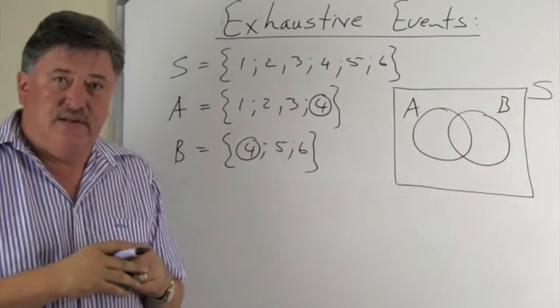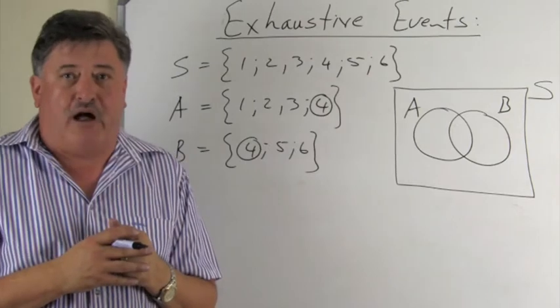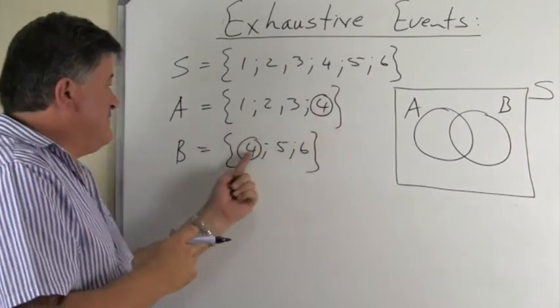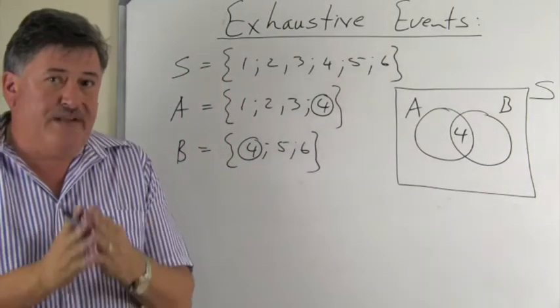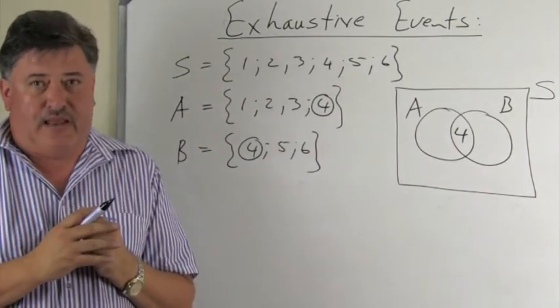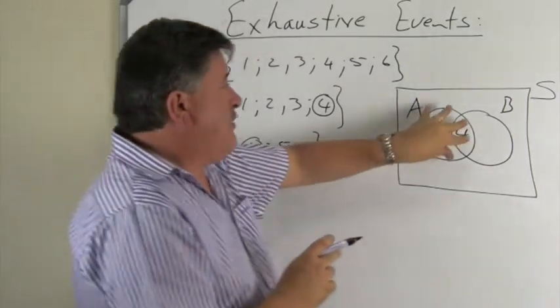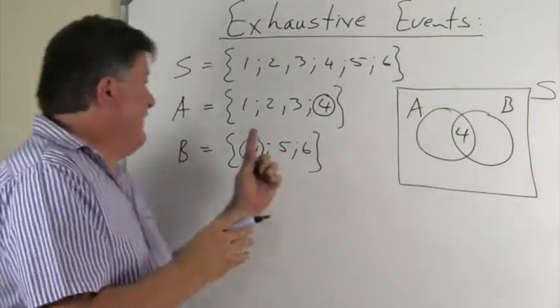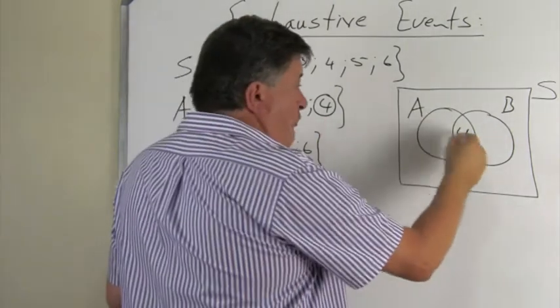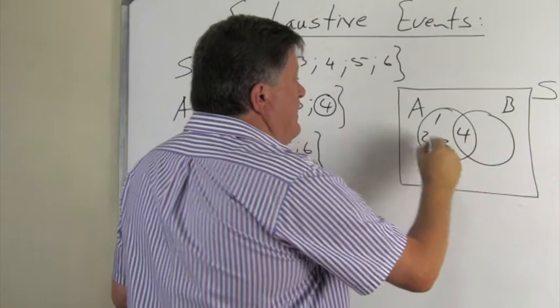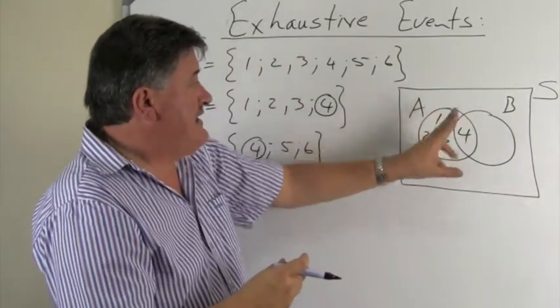When we draw our two events, we know now that there will be a both part, and the outcome that is in both is 4. Remember, we always start with that part—with those outcomes that is in both. Let's now complete event A. Event A has outcomes 1, 2, 3, and 4. We have 4 already, so we still need to put in 1, 2, and 3.